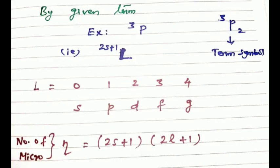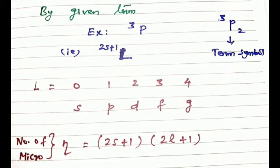Third method: when a term is given. In term symbols, the L value corresponds to letters: L equals 0 is S, L equals 1 is P, L equals 2 is D, L equals 3 is F, L equals 4 is G. The formula for the total number of microstates when a term is given is: total microstates equals (2S plus 1) into (2L plus 1).